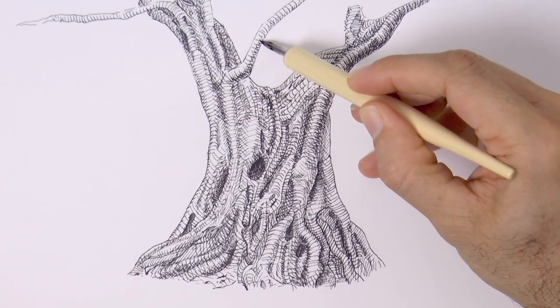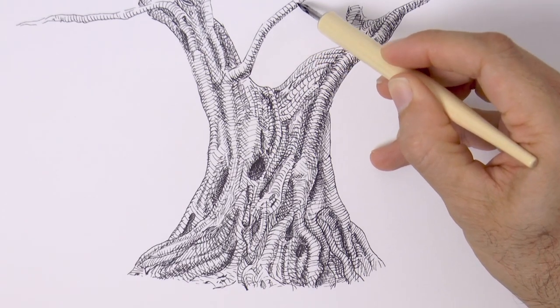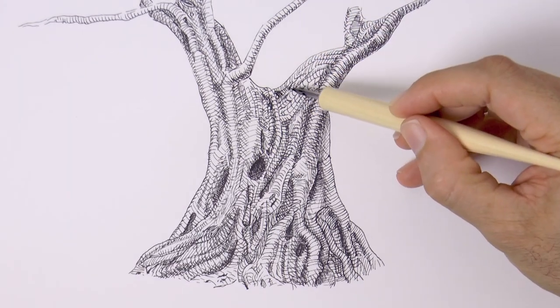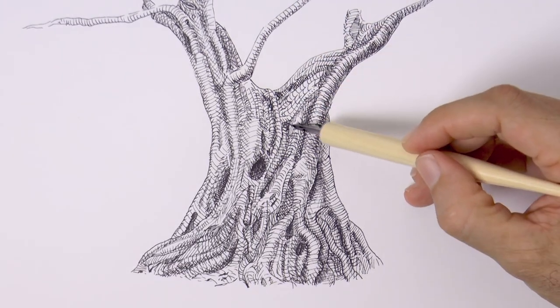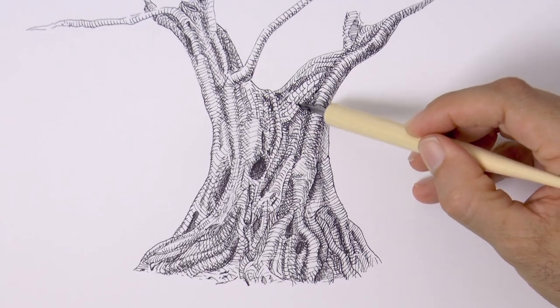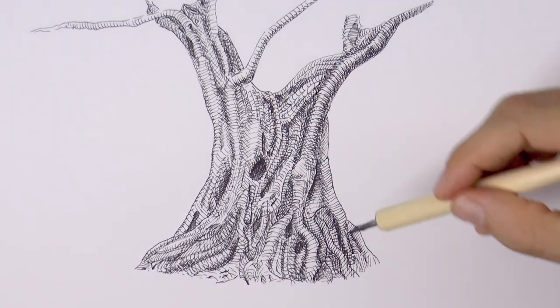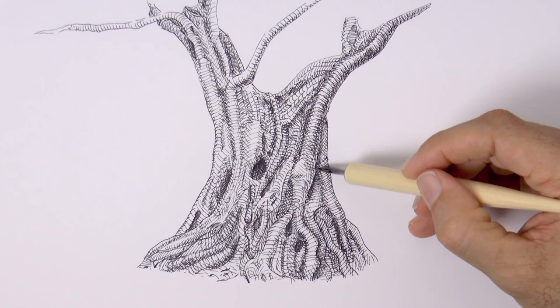It's getting there, but it looks a little bit flat. So let's darken further some of the shades. We go over them again, with lines in different directions, in new directions.